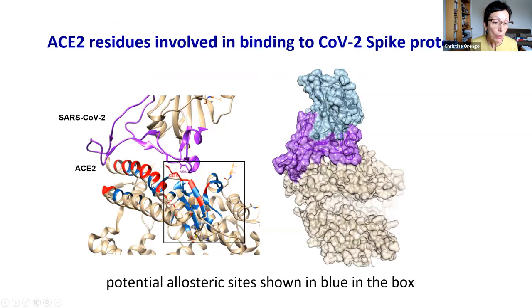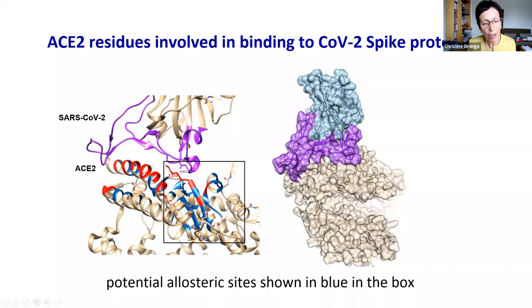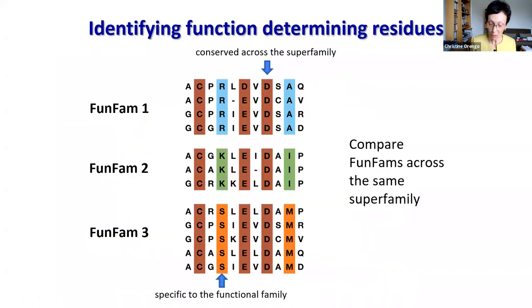We could see these residues — shown in blue — are often allosteric. They're often not the residues directly binding or directly contacting, but the residues in contact with those residues. They have an allosteric role whereby binding involves conformational changes that need flexibility in this secondary layer as well. Furthermore, we could see a very big cluster of these blue residues that we predicted here. When we ran allosteric site prediction algorithms, this was confirmed as an allosteric pocket that's important for the binding process.